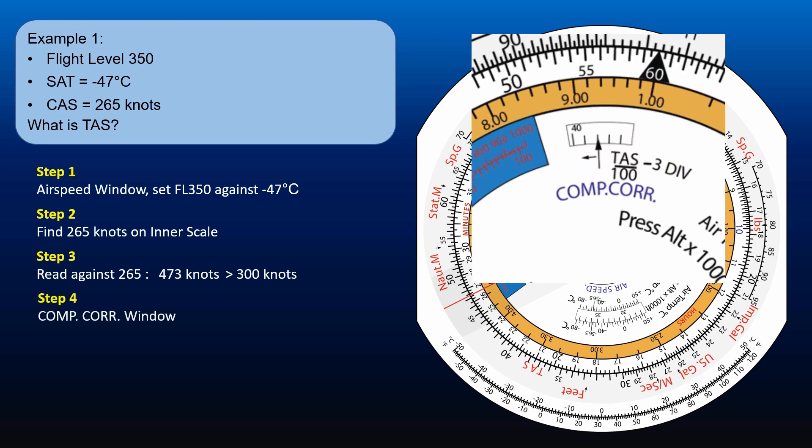Under the compressibility correction window, there is a formula: TAS divide by 100 minus 3 divisions. Thus, we need to divide the initial TAS by 100 and subtract 3. This gives us 1.73 divisions.